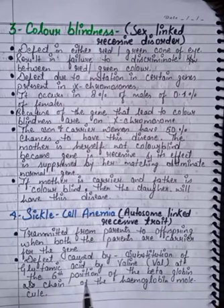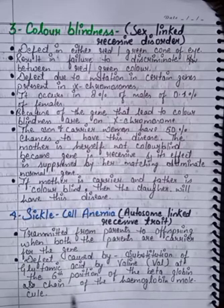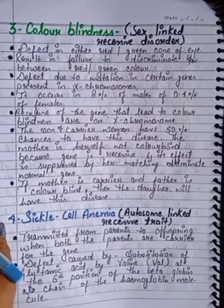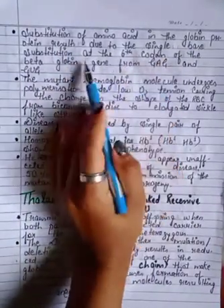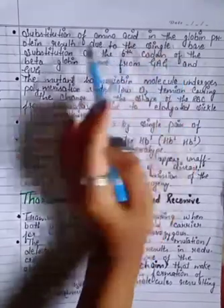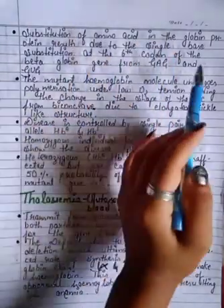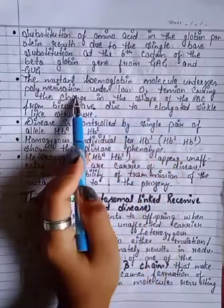The defect is caused by substitution of glutamic acid by valine at the sixth position of the beta-globin chain of the hemoglobin molecule. This is a single-base substitution in the sixth codon of the beta-globin gene, changing the codon from GAG to GUG.